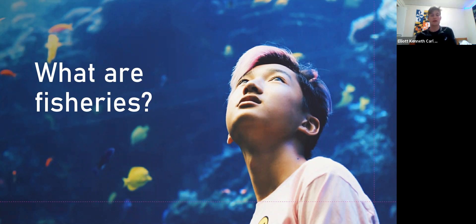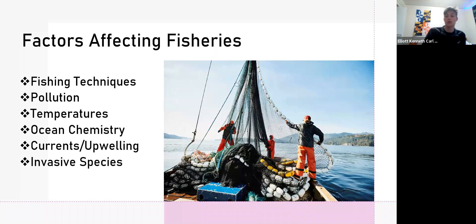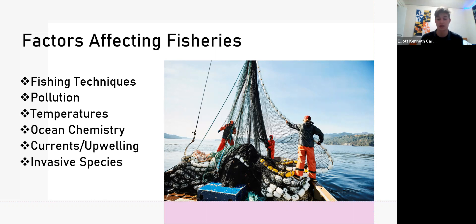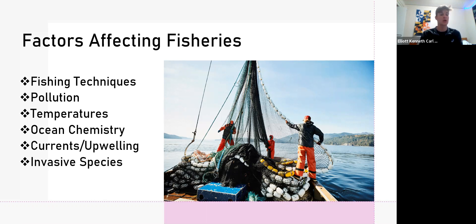There are also a lot of factors that affect fisheries, and most of them are negative. Any change to ocean chemistry can disturb a fishery — changes to salinity and pH, ocean temperature, harmful fishing techniques, pollution, specifically nutrient runoff. That causes eutrophication and anoxic dead zones. Changes to currents and upwelling, nutrient upwelling, and invasive species can also harmfully impact fisheries.